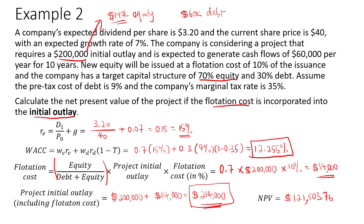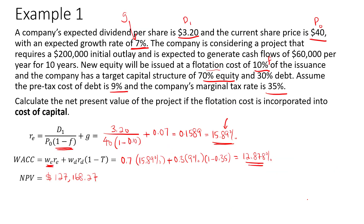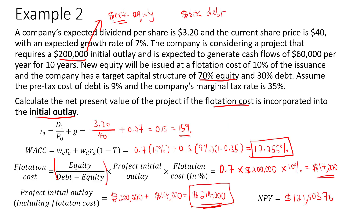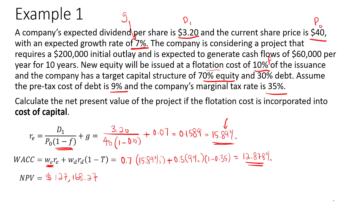Comparing the two approaches, approach 1 gives an NPV of $127,168.27 while approach 2 gives $121,503.76 — approach 1 is higher. As mentioned, approach 2, where the flotation cost is incorporated into the project's initial outlay, is the recommended approach. However, approach 1, where the flotation cost is incorporated into the cost of capital (specifically the cost of external equity), is more commonly practiced because it is simpler and quicker.